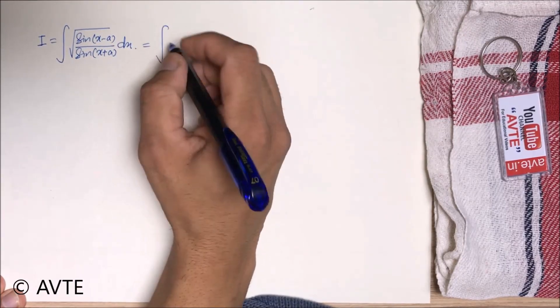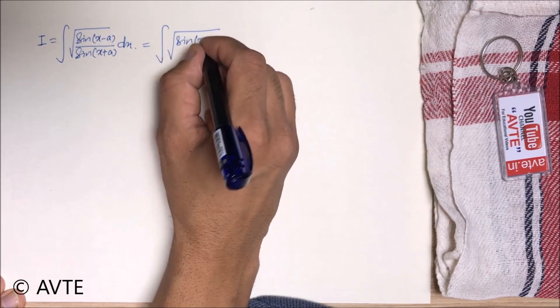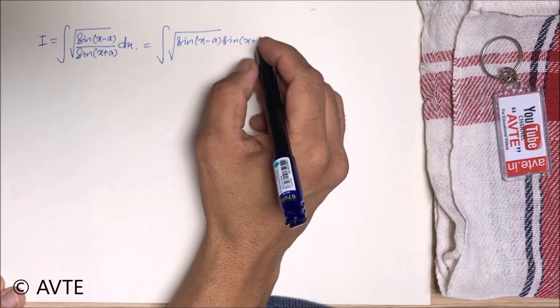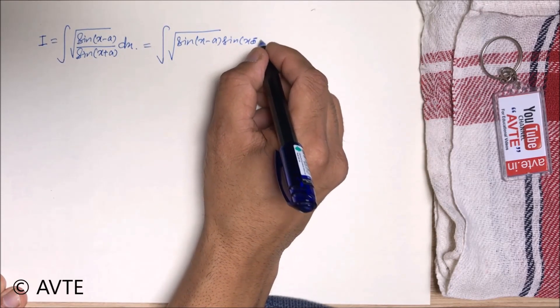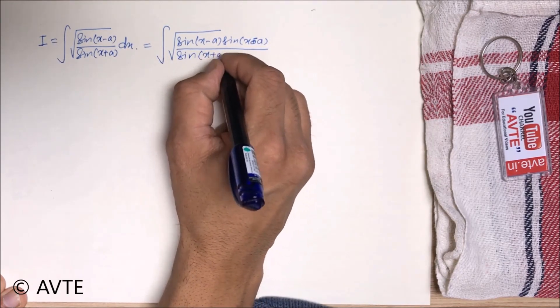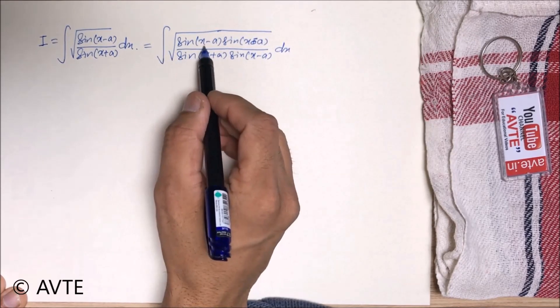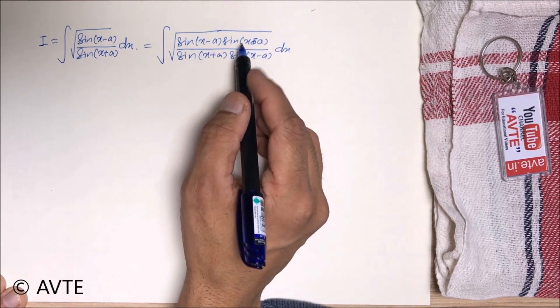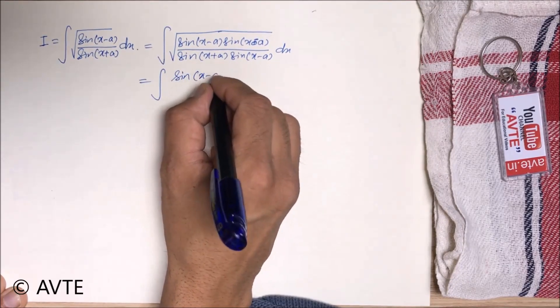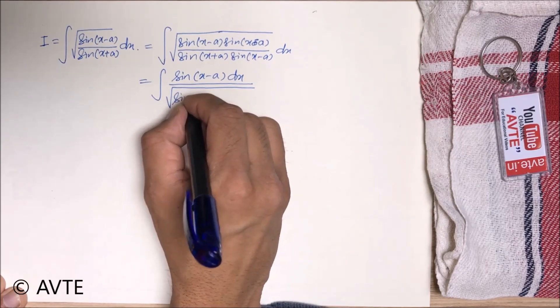Now what we will do in solving this question we will rationalize. We will multiply and divide by sin of x minus a within the root. Now this sin x minus a into sin x minus a will turn to whole square and it will come out of the square root. But the denominator will stay like the way it is.